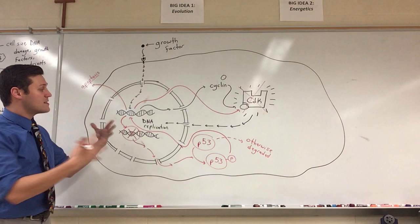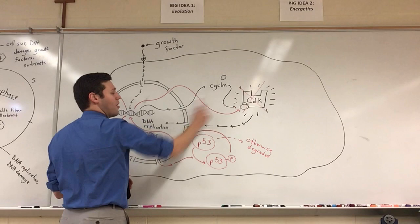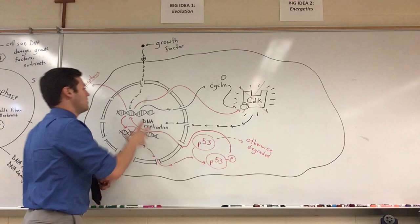So, this is how we regulate the cell, through all these different feedback loops, right? DNA is damaged. Let's try to make the DNA not damaged. And let's temporarily put a pause on the cell cycle progression while we try to fix this. And if it's not fixable, apoptosis.